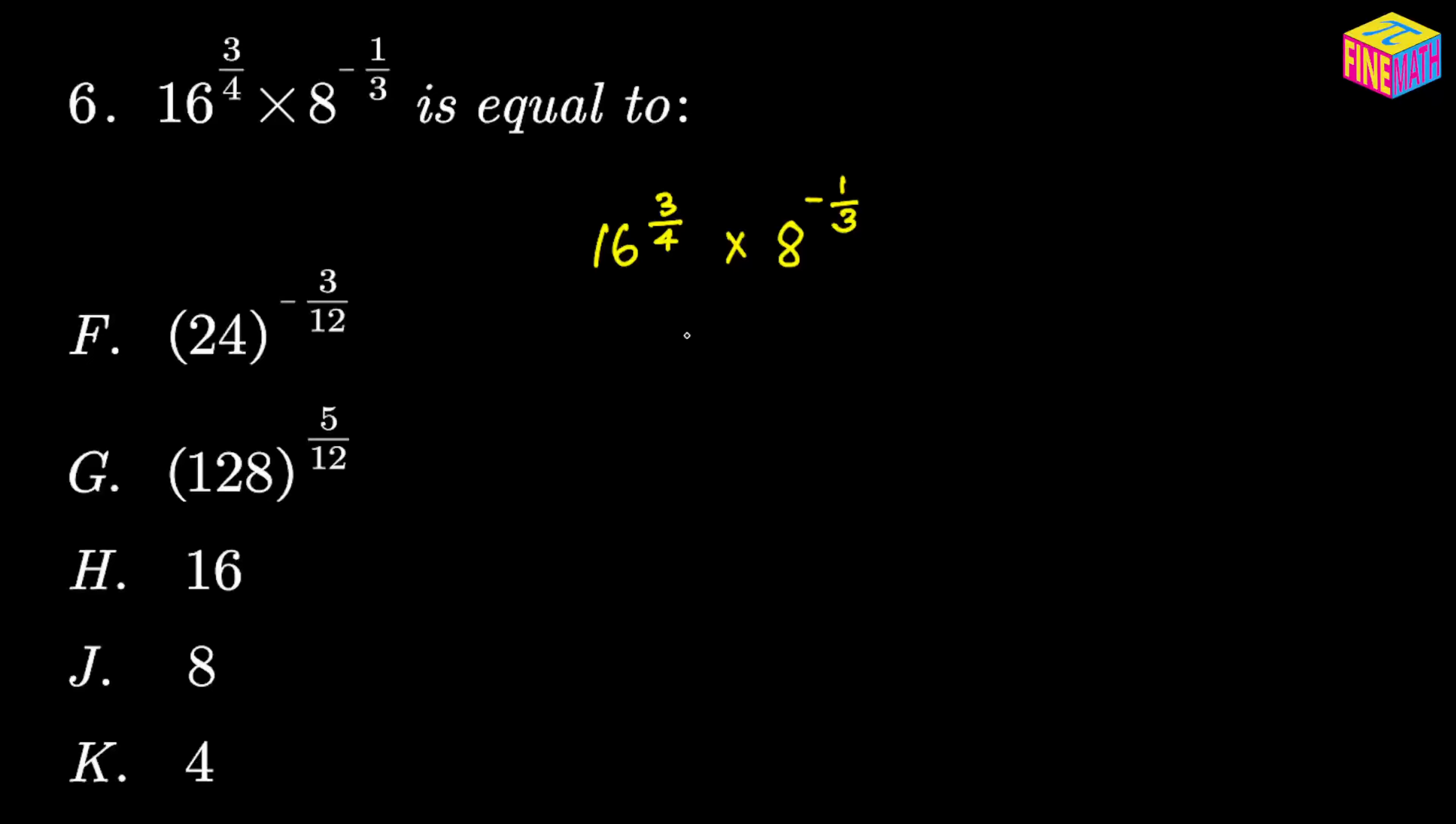Here we have 16 to the power 3/4 multiplied by 8 to the power negative 1/3, and we have to simplify to find a value. If you look at the answer options, they look pretty confusing. So let's try to solve the problem.